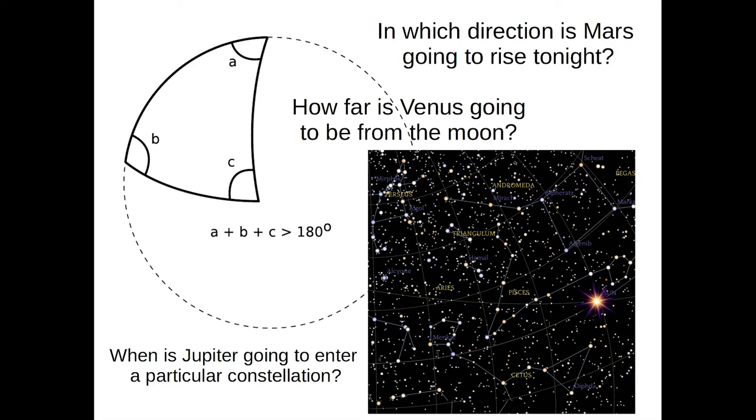Another problem which was important to these people is how to calculate, say, the angle between two planets, or when is a planet going to enter a particular constellation, or if I know the position of the stars today, how can I calculate the date? For all this, you basically need to be well-versed in spherical trigonometry. The idea is that when you look at the night sky, it is essentially like you are looking at the inside of a sphere, and geometry on a sphere is very different from geometry on a plane.